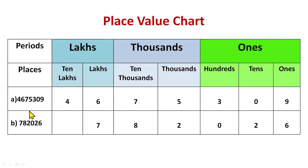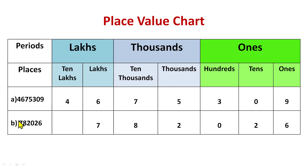Likewise you can write this next example under the place value chart. Again you will not start writing from seven — you'll start from the right side digit, which is six. Write six under ones, two under tens, zero under hundreds, two under thousands, eight under ten thousands and seven under lakhs. We do not have anything for ten lakhs, so we won't write it — or you can also write zero.